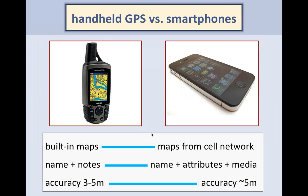This really makes the smartphone a tremendous mapping device. Compared to traditional handhelds, some things are still good about them — their antenna is better at getting signal, they are more rugged, and they have built-in background maps, whereas some smartphone mapping apps require cell connectivity to get maps. With handheld GPS you can do names and notes, but you're not going to get a lot of attribute data, and in most cases you can't attach media such as photos or video.